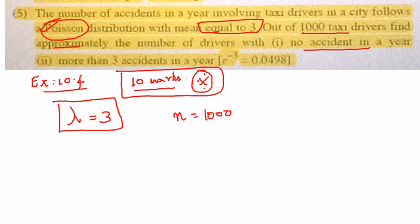And in the first part of the sum, you have to find the number of drivers who will drive without having any accident in a year. Right. So first, I am going to find the probability of having no accidents in a year, where x is denoting the random variable which denotes the number of accidents in a year.